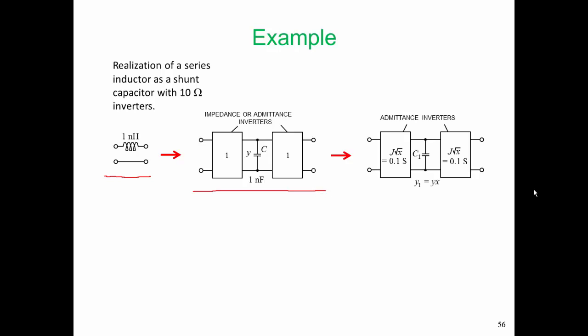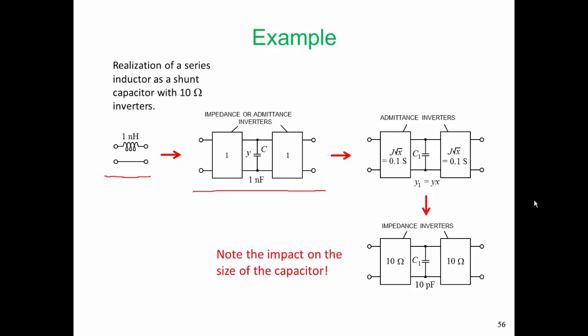We can scale this so that our admittance inverters are 0.1 Siemens, and we will also scale the capacitor C. So if we had 10 ohm impedance inverters,